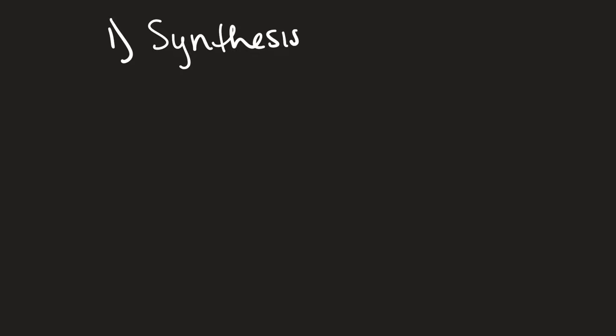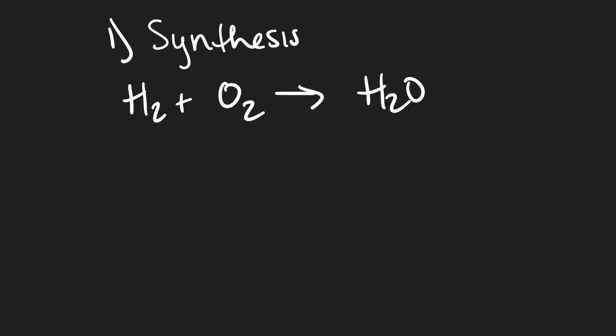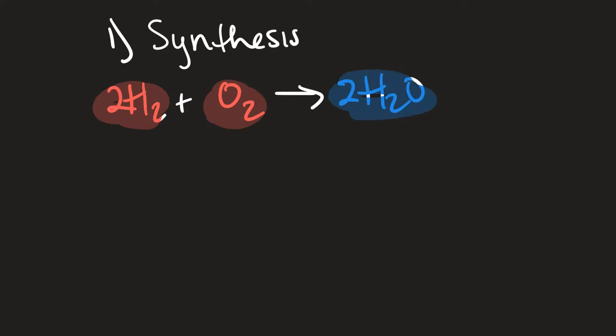The first one is synthesis. Synthesis reactions are basically reactions where you have smaller pieces combining to make a larger chemical or compound. For example, the synthesis of water: H2 plus O2 yields H2O. You have these smaller elements that combine to make a larger compound — that's a synthesis reaction.